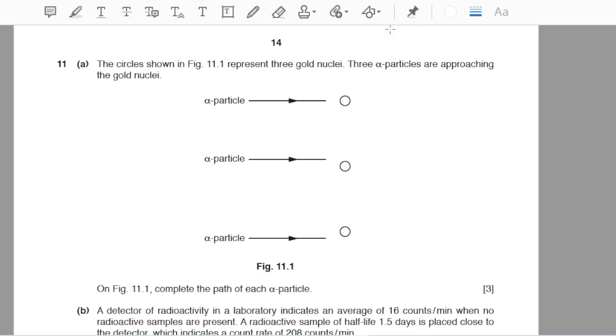Question number eleven part a: the circles shown in figure 11.1 represent three gold nuclei. Three alpha particles are approaching the gold nuclei. On figure 11.1, complete the path of each alpha particle. Alpha particles are positively charged particles, and so are the three gold nuclei. The first alpha particle is coming directly towards the center of the nuclei and the alpha particle will be deflected to the left. The second particle is not aiming to hit the center of the nucleus, so it will not be deflected completely, rather it will be deflected at an angle and then continue to go in a straight line. The third alpha particle will be the same case, deflected a bit and then continue to move in a straight line.